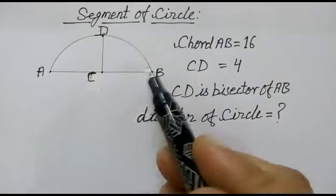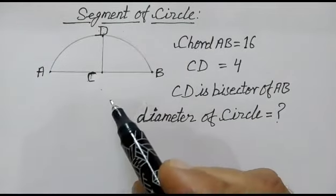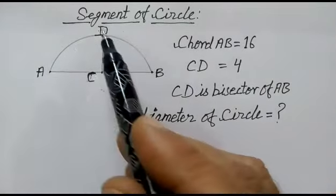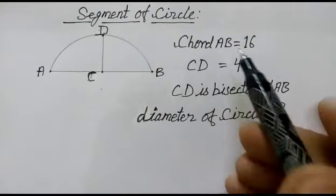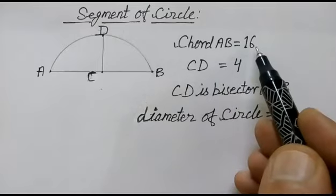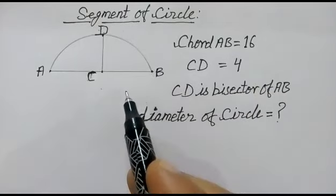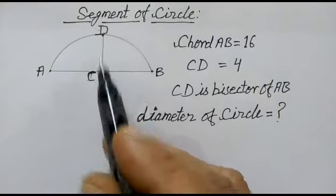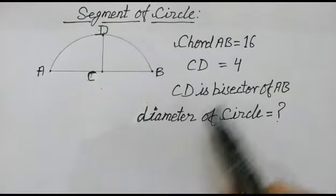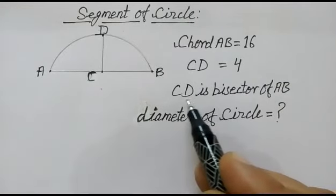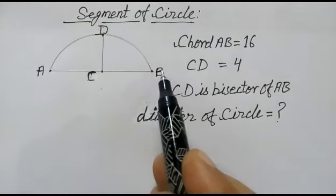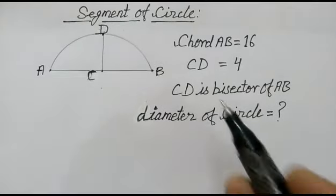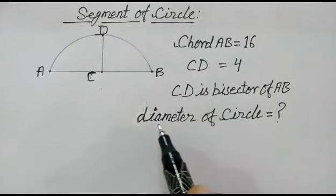Hi friends, today we have a nice problem. We have given a segment of a circle. The chord AB is equal to 16, and CD is equal to 4. The condition is that CD is the bisector of AB. We have to find out the diameter of the circle.